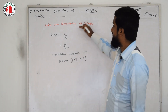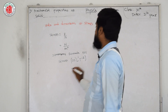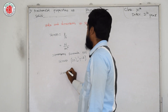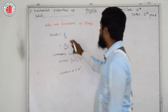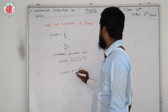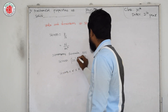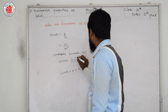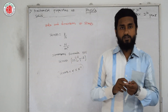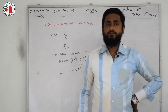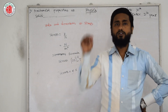Stress = force × area⁻¹. Expanding: force has dimensions M¹L¹T⁻², and area is L², giving stress the dimension M¹L⁻¹T⁻². This same dimension formula applies to Young's modulus, modulus of rigidity, and bulk modulus, since all are ratios of stress to strain (which is dimensionless). I will place these dimension formulas on your screen for reference.